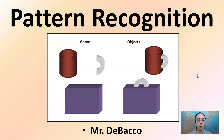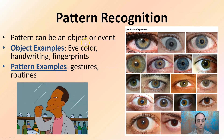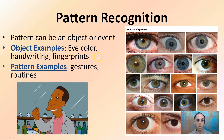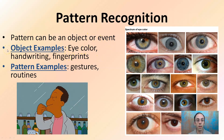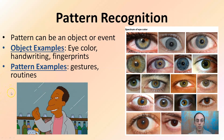Getting more details of pattern recognition — it can be an object or an event. Object examples would be eye color, handwriting, fingerprints. These can all get into certain patterns. There are also gestures or routines that can be a pattern that we may be able to see or recognize with certain people.